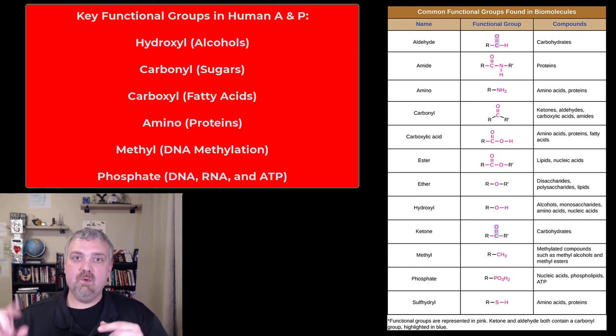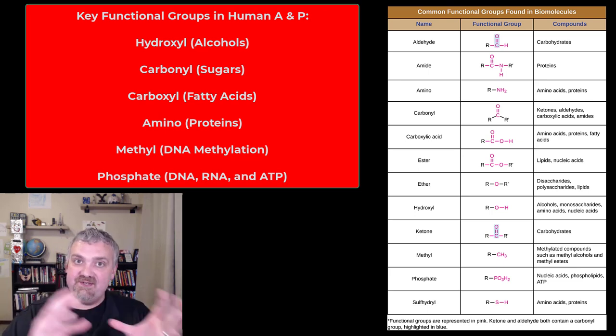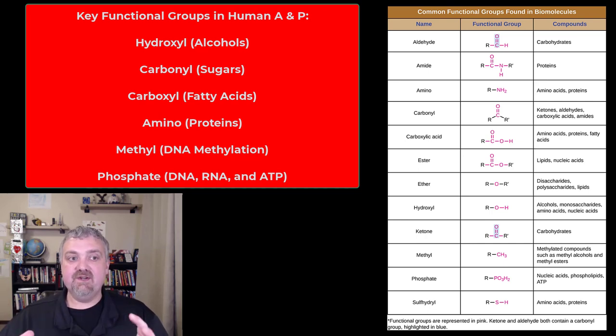Got a long list of functional groups here. We're just going to talk about six of them. Functional groups, they function in chemical reactions as a single unit or a group. Pretty good name for it, right? Functional group. They're going to function as a group. So there are six functional groups that are critically important in human physiology.